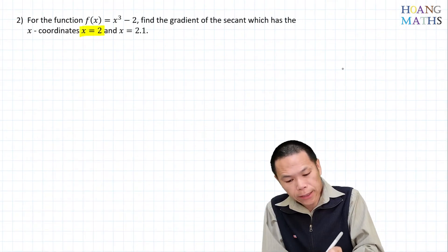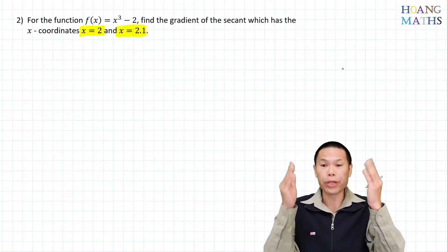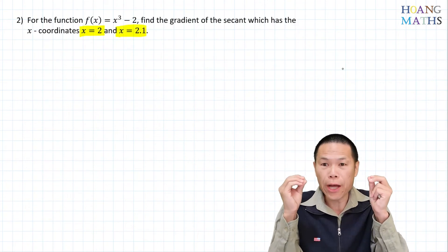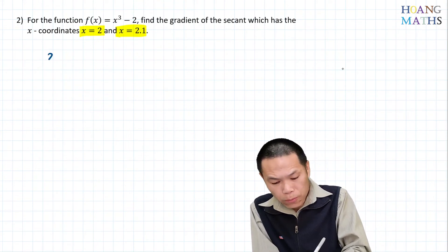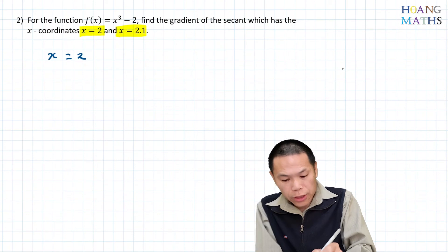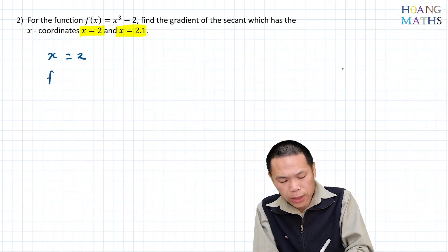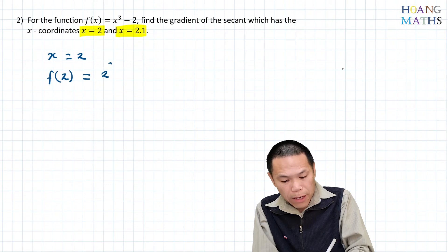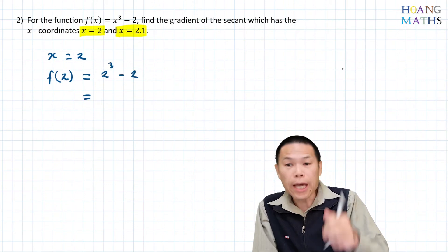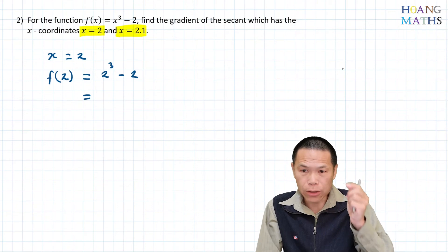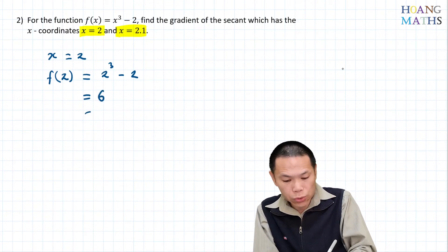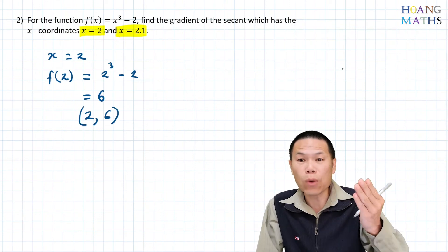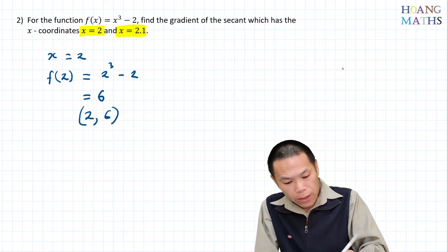We only have the x-coordinates for both points, so we need to find the y-coordinates first. For x = 2, we calculate f(2) = 2³ - 2. That's 8 - 2 = 6. Therefore, the point is (2, 6), which is (x₁, y₁).